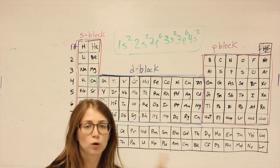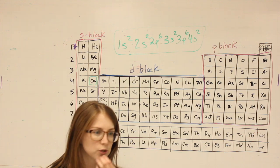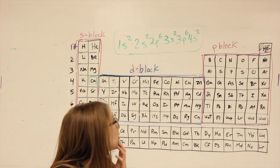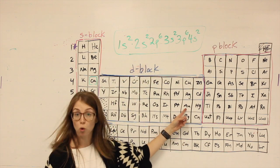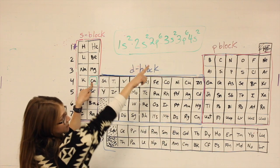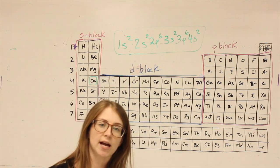Now you'll notice once you do a bunch of these, they get repetitive. The beginning is always 1s2, 2s2. Because of that and because of how long it would take to do something like gold, imagine if calcium was that much writing, gold would be even more. There is something called the noble gas shortcut.